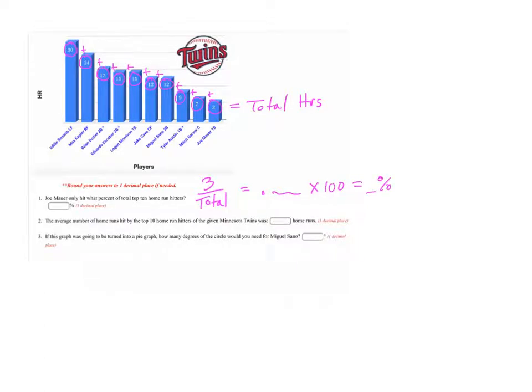Next one, the average number of home runs hit by the top 10 home run hitters. Whenever you want to find an average, you add up the total of all the values divided by how many there are. In this case, there are 10.